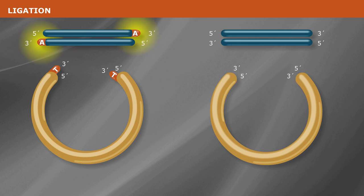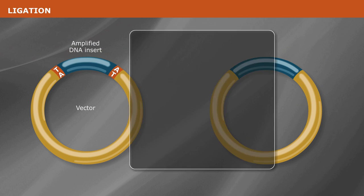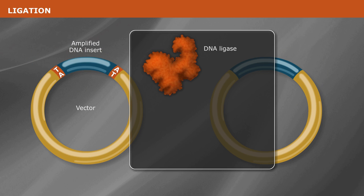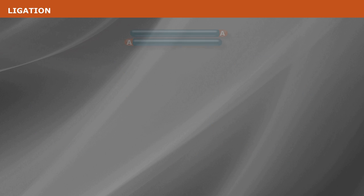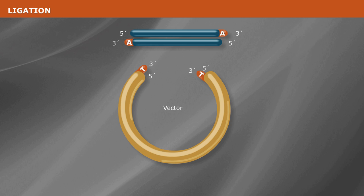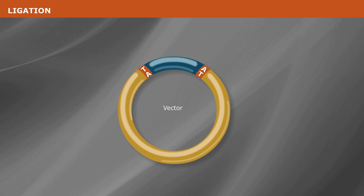Next, join the amplified DNA fragments to the appropriate vector. This can be done by the use of a DNA ligase, or by use of activated vectors that are covalently bound to an effector enzyme which facilitates vector to insert joining. Depending on the vector chosen, the fragment of interest may be inserted non-directionally at the ligation junction, such as in TA cloning.